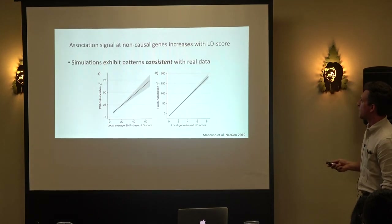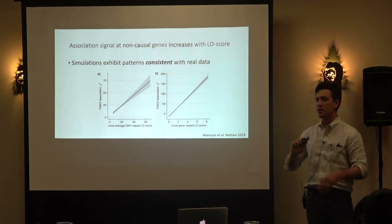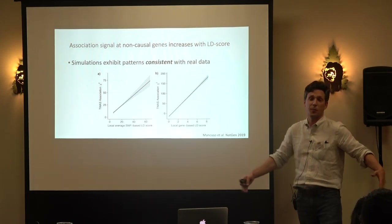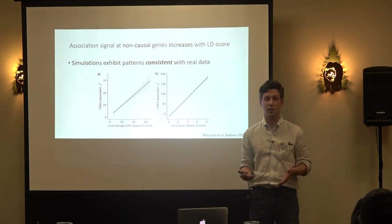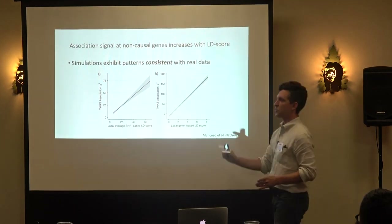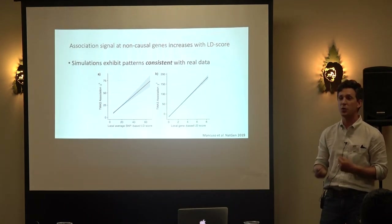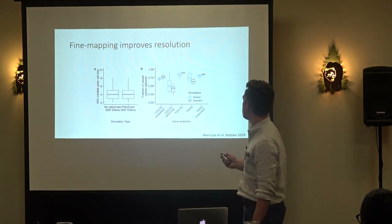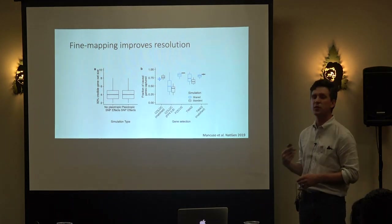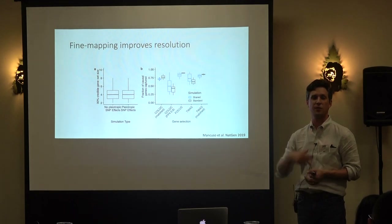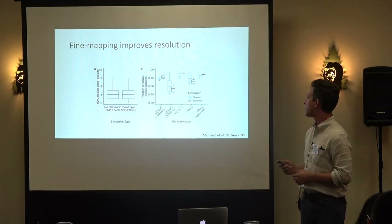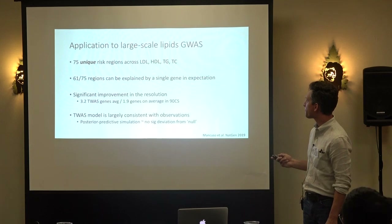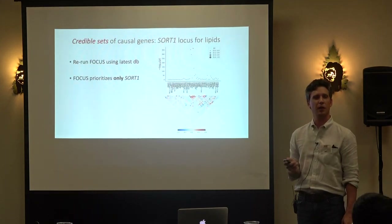In simulations where we simulate data from a set of genes, prune those genes, and do a TWAS, we should see completely null results because the causal genes are absent — but we see strong association signal. The stronger the LD at a region, the more likely other genes will tag the signal. Simulations hold up, and we showed that using our approach improves resolution — it reduces the number of genes you need to prioritize for functional follow-up compared to approaches like Coloc or just using transcriptome-wide significance.